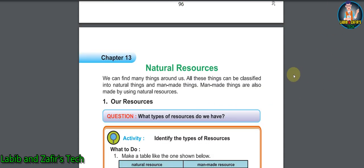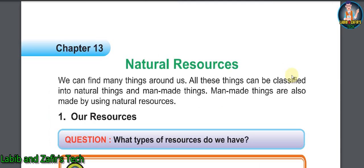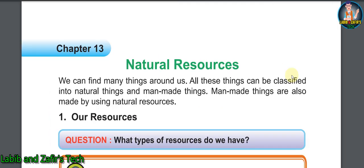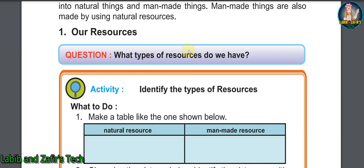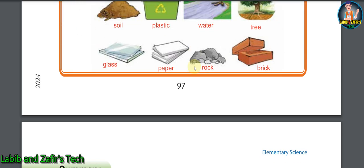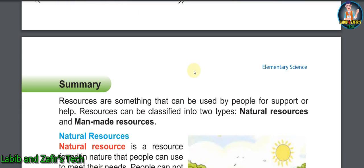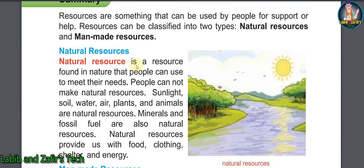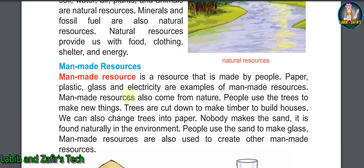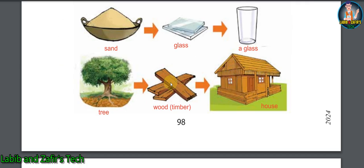We are in Chapter 13: Natural Resources. In the first lesson, you will be able to know about our resources — what type of resources you have in your country, for example natural resources like food and clothing, and man-made resources.